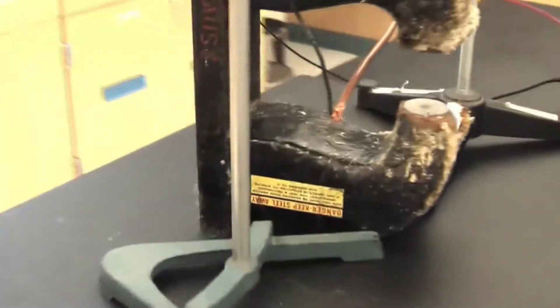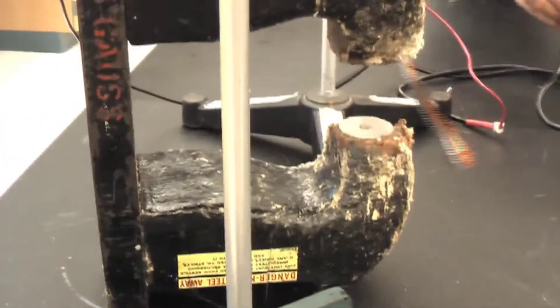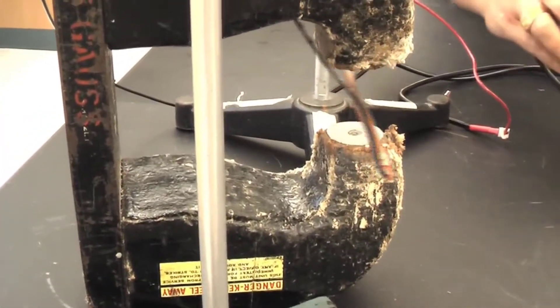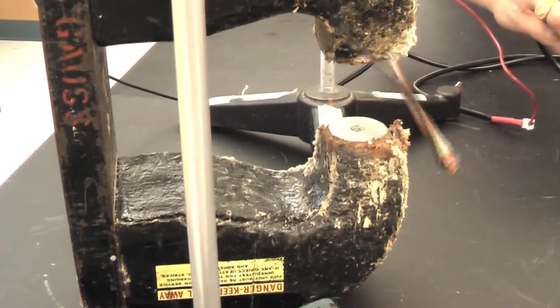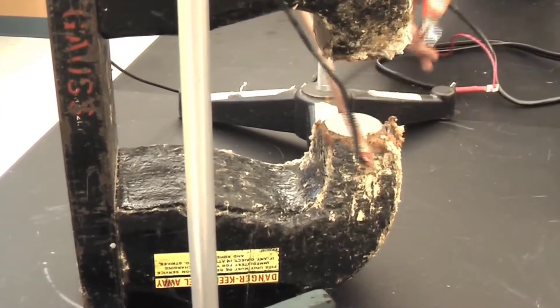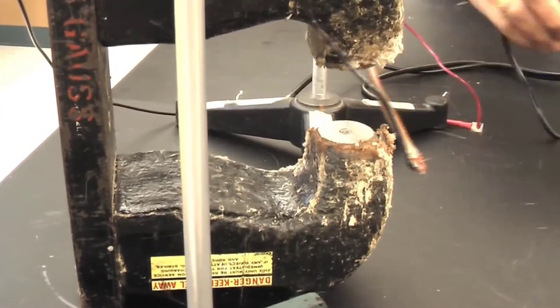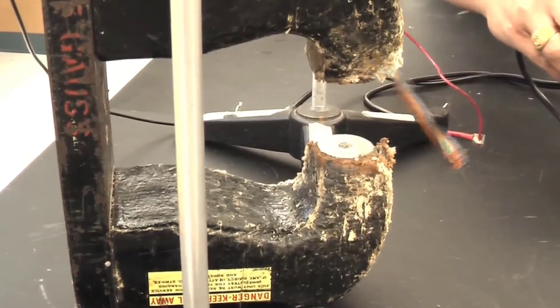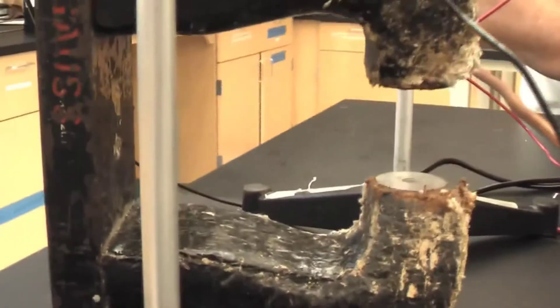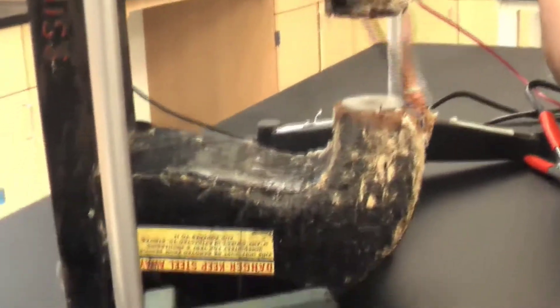Now if I reverse the direction of the current, we expect an outward force. And there you see it floating there. Because now that I've reversed the direction of the current, current is flowing.